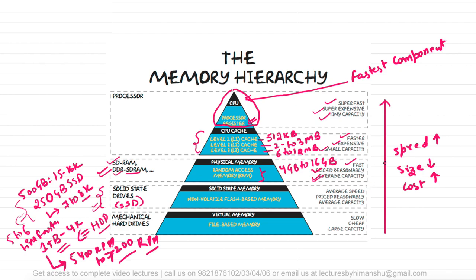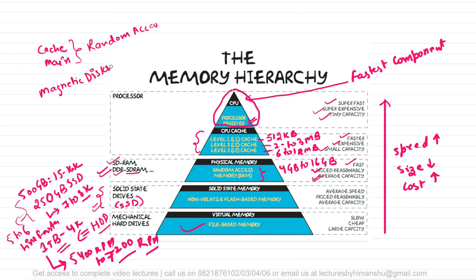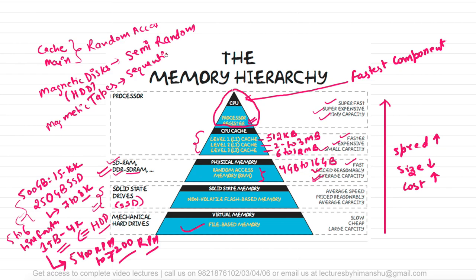Some levels of this memory hierarchy allow random access and some allow sequential access. Cache memory and main memory allow random access — you can access data from any location. Magnetic disks (hard disk drives) allow semi-random access, and magnetic tapes allow only sequential access, though magnetic tapes are rarely used nowadays.